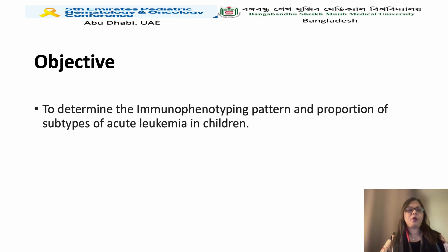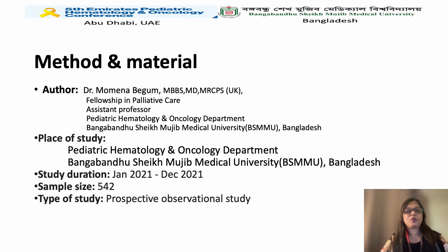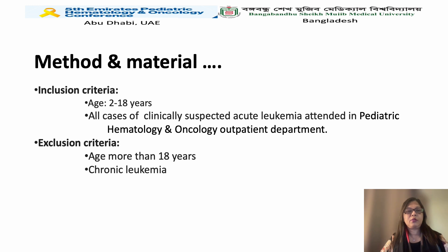The objective of this study is to determine the immunophenotypic pattern and proportion of subtypes of acute leukemia in children. This is a prospective observational study conducted in the Hematology and Oncology Department of Bangabandhu Sheikh Mujib Medical University from January 2021 to December 2021, with a sample size of 542. Children aged 2 to 18 years suspected of acute leukemia were included; those over 18 years and chronic leukemia cases were excluded.